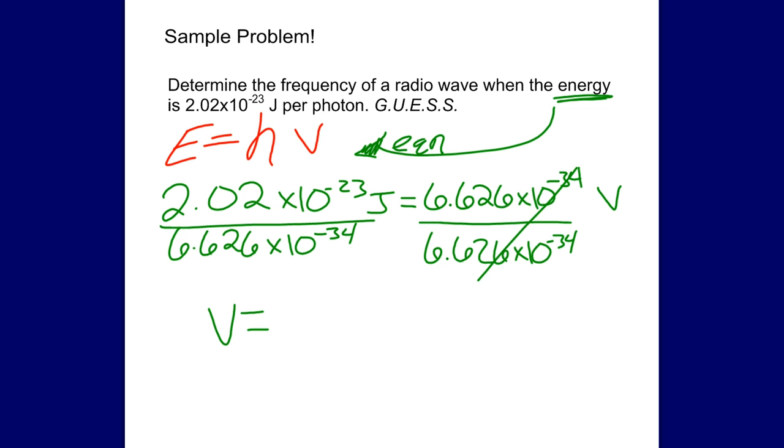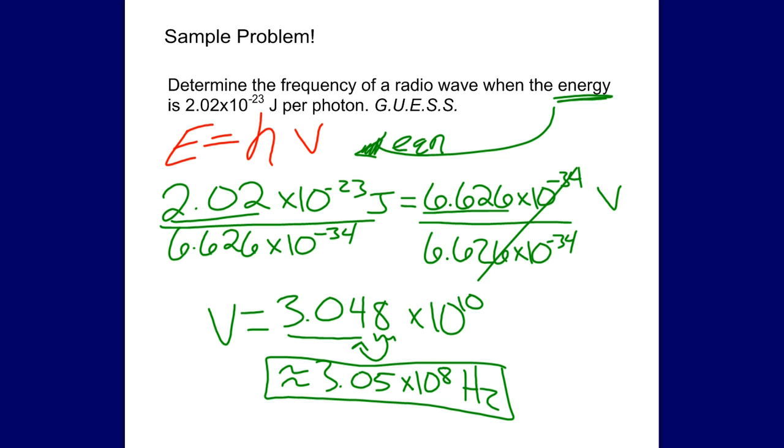V equals 3.048 times 10 to the... let me check sig figs. This one has 3 sig figs, this one has 4. My answer should only have 3 sig figs. So I'm going to round this to 3.05 times 10 to the 10th... sorry, 3.05 times 10 to the 11th hertz. And that is how you calculate the frequency when given the energy of a photon.